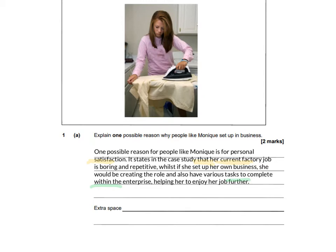So I've put: it states in the case that her current factory job is boring and repetitive — so there's my evidence. Whilst if she set up her own business she would be creating the role, and also have various tasks to complete within the enterprise, helping her to enjoy her job further — so that's my reasoning. So I've got my point, I've got my evidence, and I've got my reasoning, and that gets me my 2 marks.